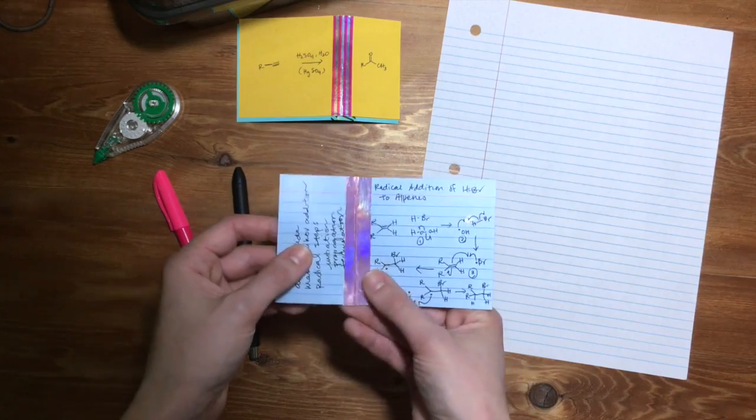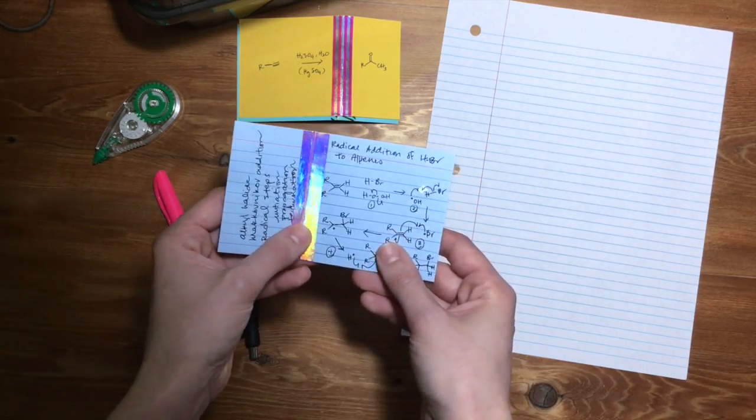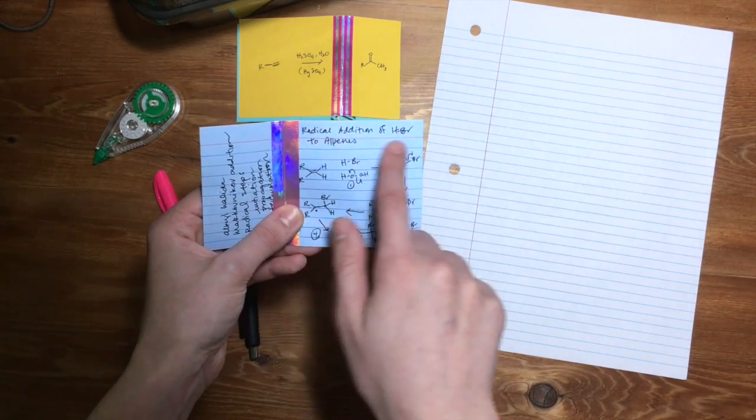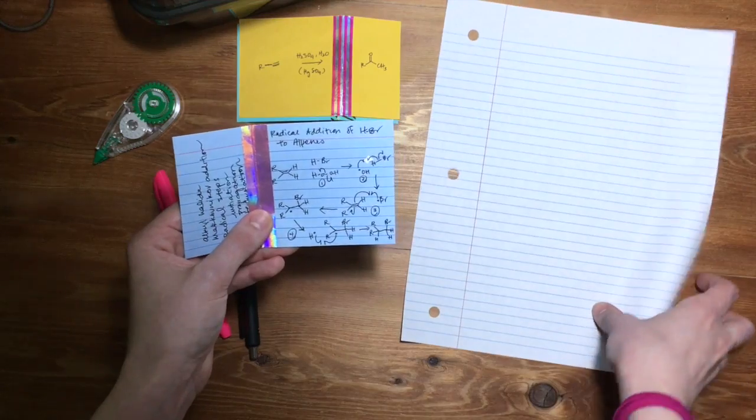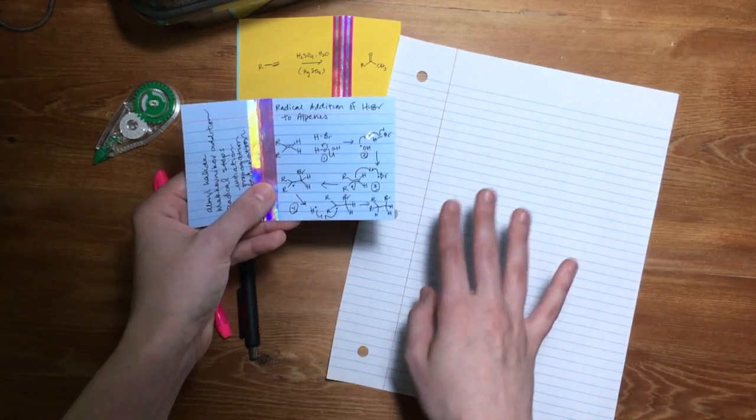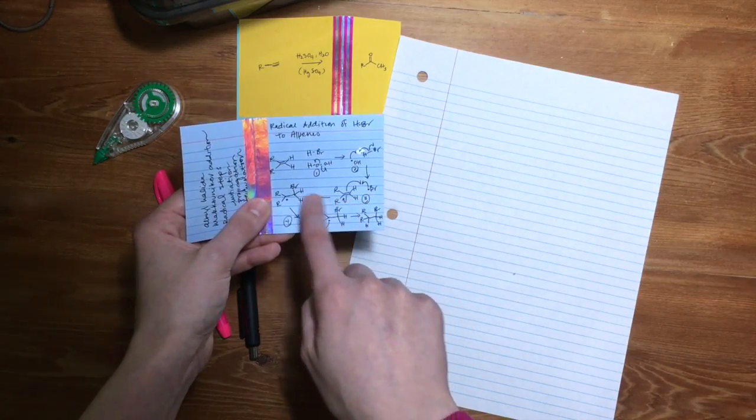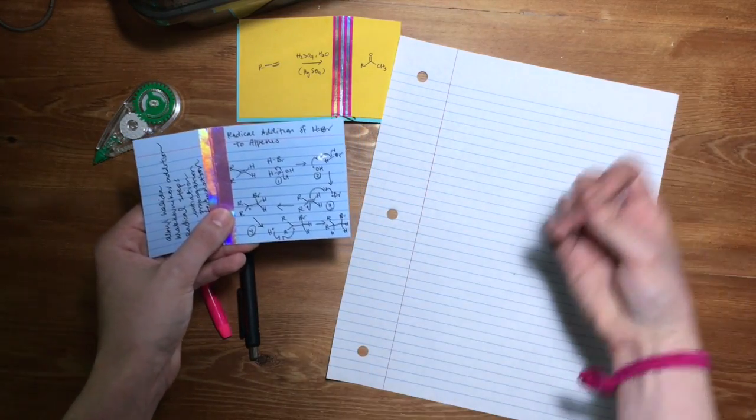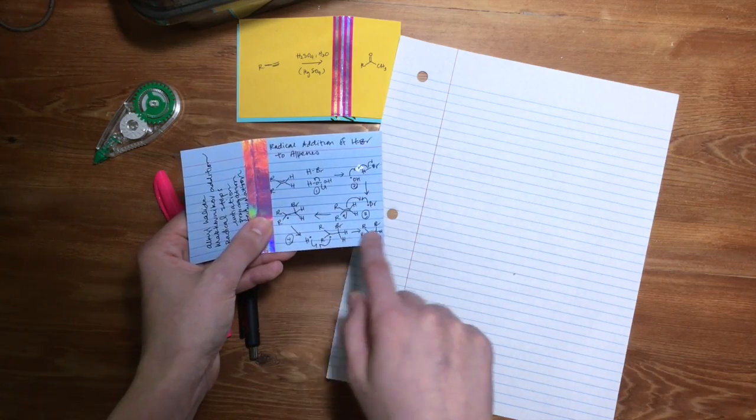This is the name of the reaction. I would put it here right above the mechanism. And you're probably going to need a piece of scratch paper when you're making your cards for the first time to kind of work out what the mechanism generally should be until you kind of understand what's going on. Then when you feel like you can do it, write it small and concisely on the note card.